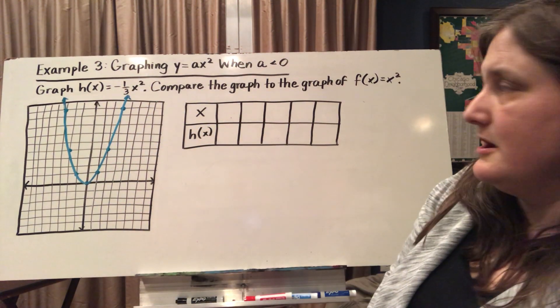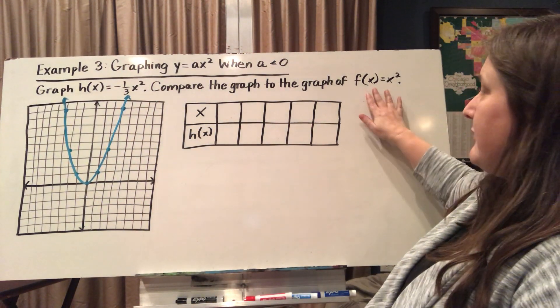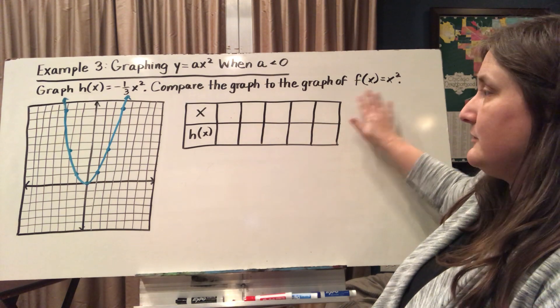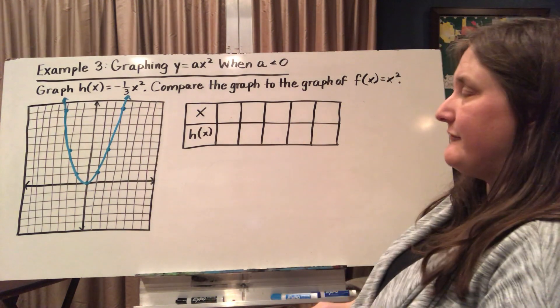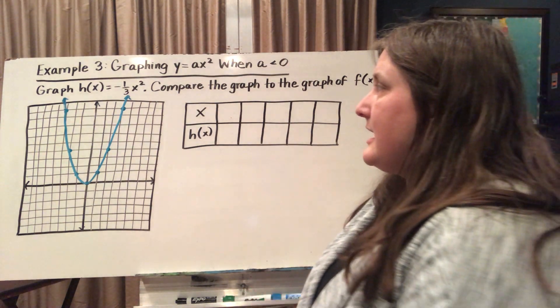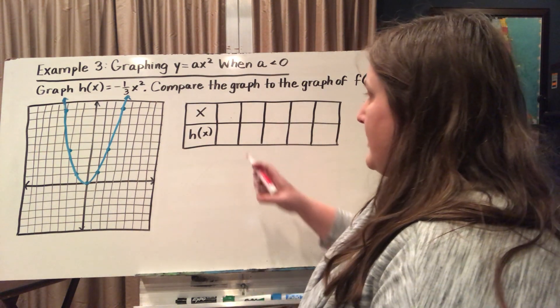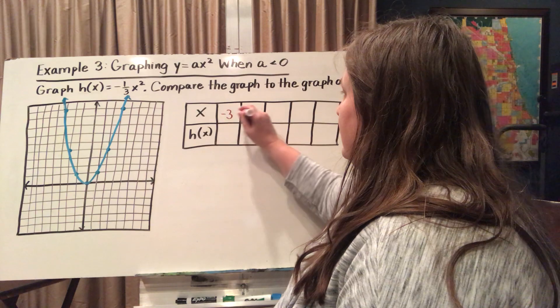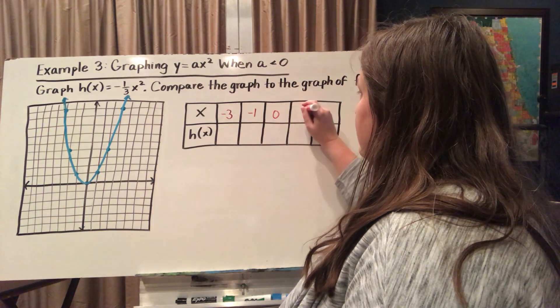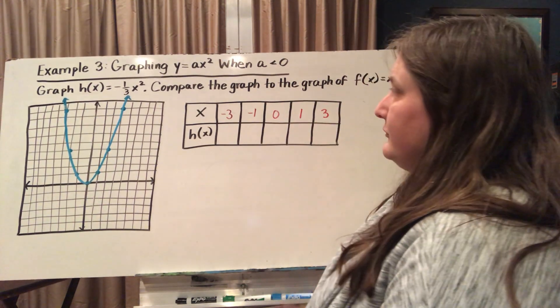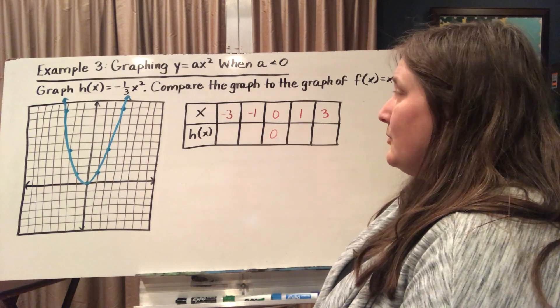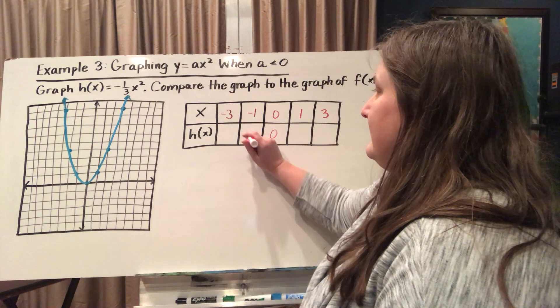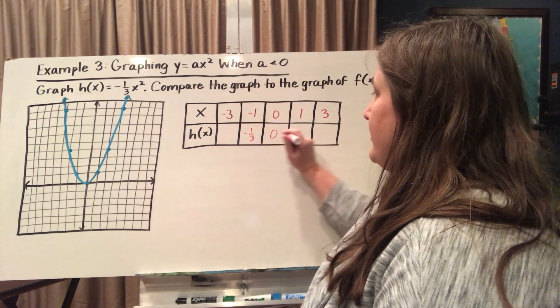Let's take a look at another example here. I've already graphed my parent function, f(x) equals x squared. That's my light blue one. And now I'm being asked to graph h(x) equals negative one-third x squared. So I'm going to give myself some input values to test. If I plug in 0, I'm going to get 0 here. If I plug in 1 or negative 1, I'm going to get negative one-third.